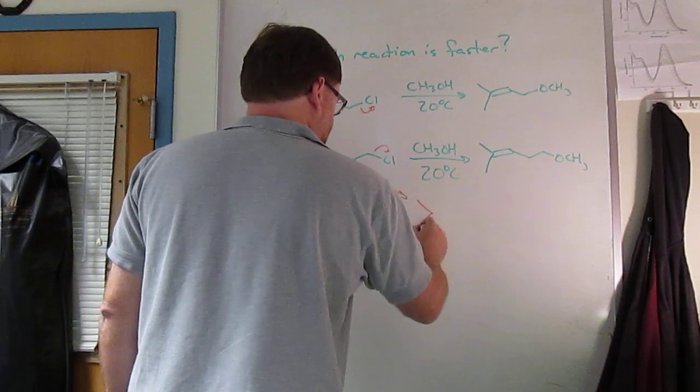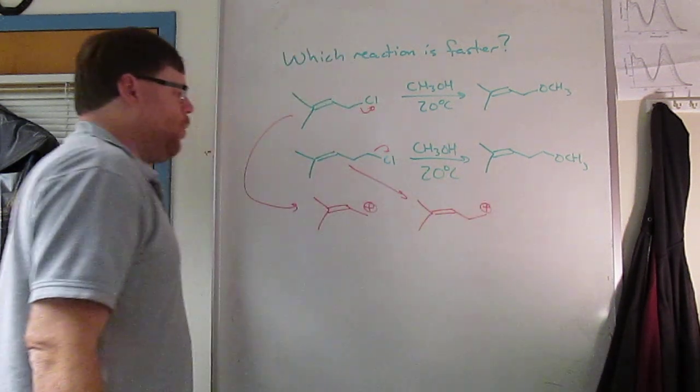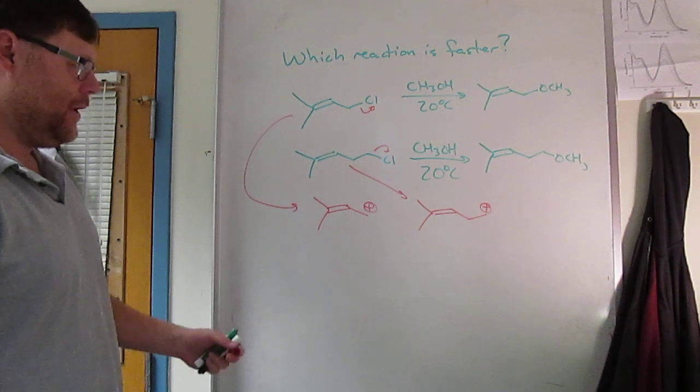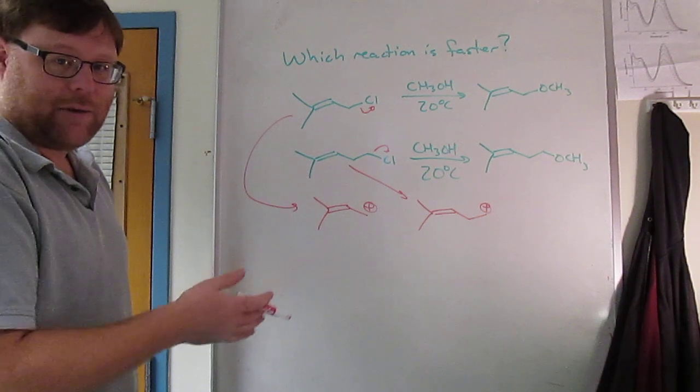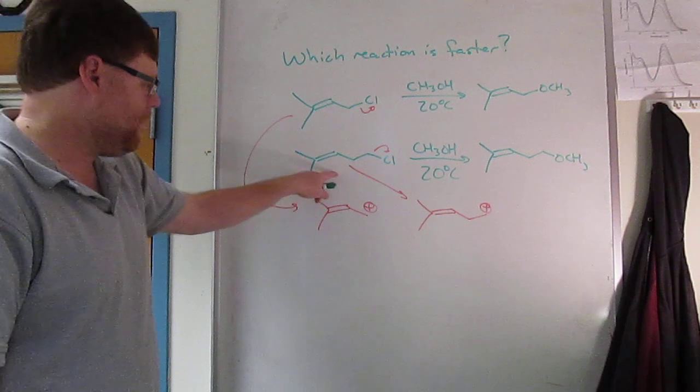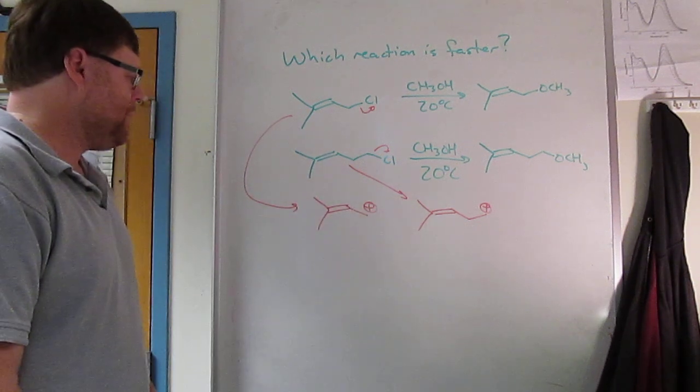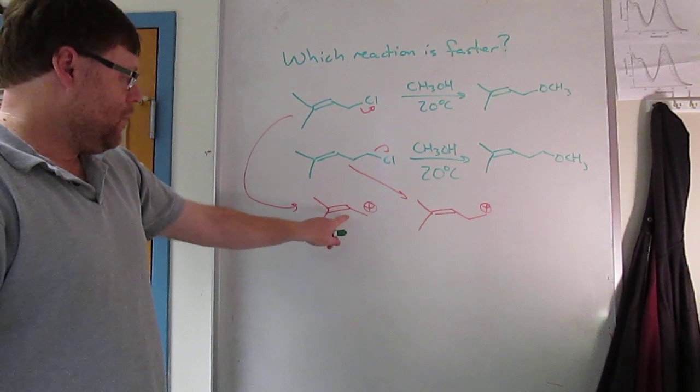So the chloride will leave. Which one of those cations is better? That's really what it comes down to. In an SN1 reaction, rate limiting step is formation of the carbocation. So this is the rate limiting step. And I ask you, hit pause, go away and figure out which one of these cations is better, more stable.